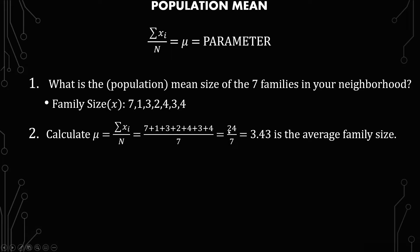You add it up and get 24 divided by 7, which gives you 3.43 as the average family size in your neighborhood. This is a real parameter. This isn't using thousands of bits of data. You can do this in your own area to find out what your population mean for family sizes is — whether it's apartments or something else. There's real-world application in knowing this.